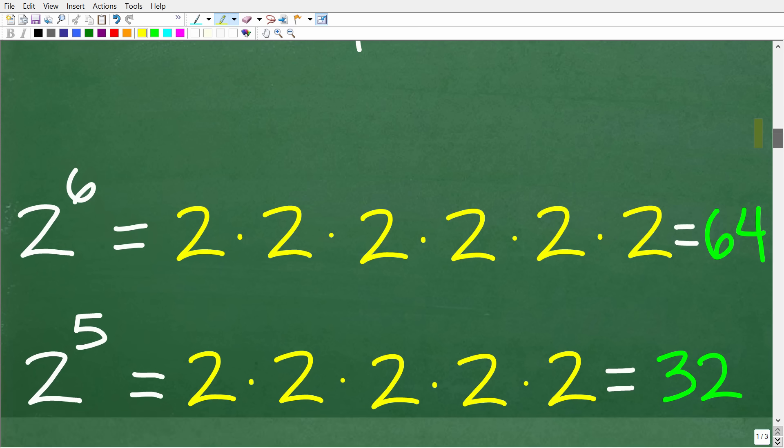All right, so 2 to the 6th means take 2 and multiply it by itself 6 times. So we have 1, 2, 3, 4, 5, 6. So if we take 2 and multiply it by itself 6 times, we have 64. Now 2 to the 5th is take 2 and multiply it by itself 5 times, and you'll get 32. So 2 to the 6th is equal to 64 and 2 to the 5th is equal to 32.